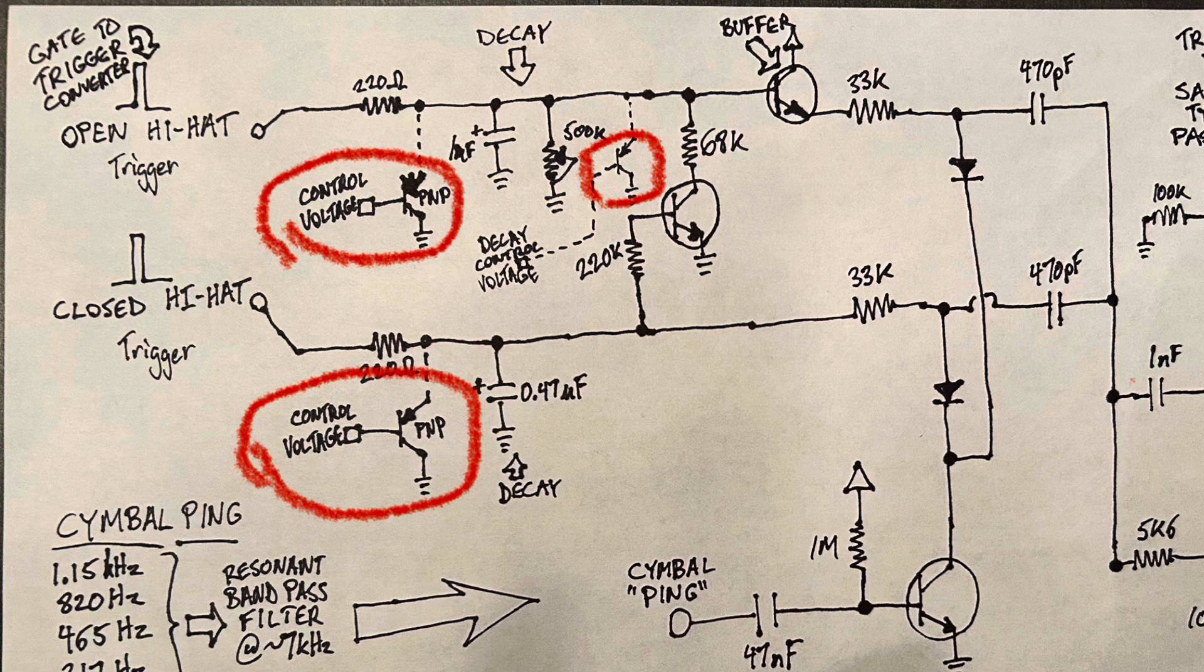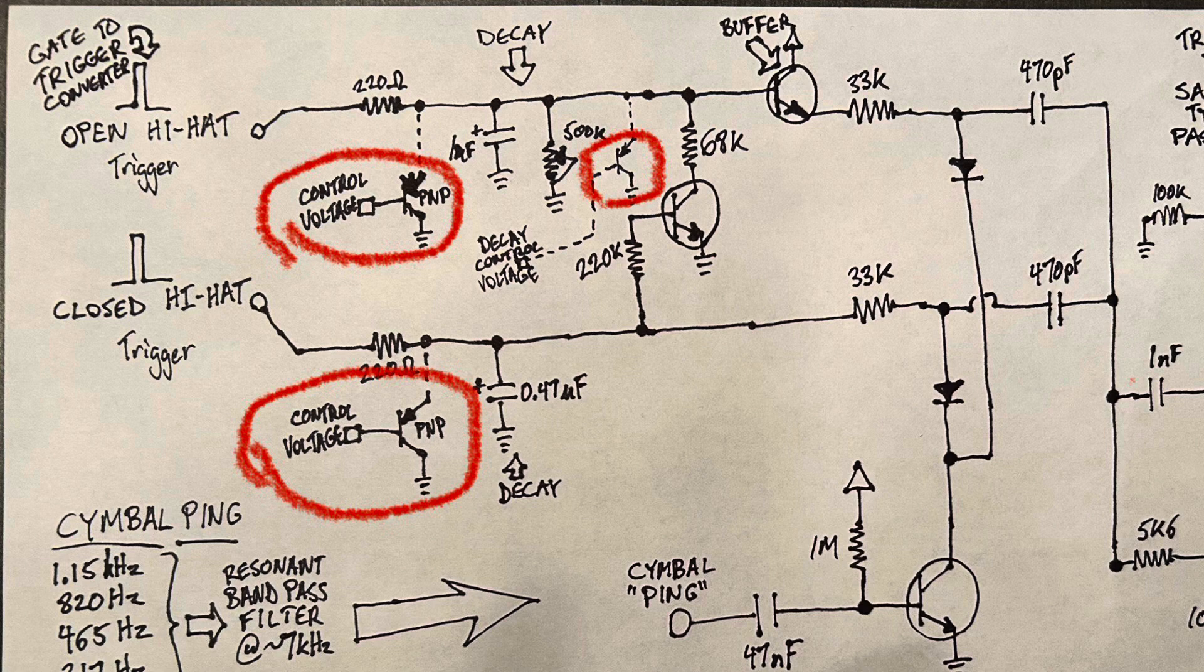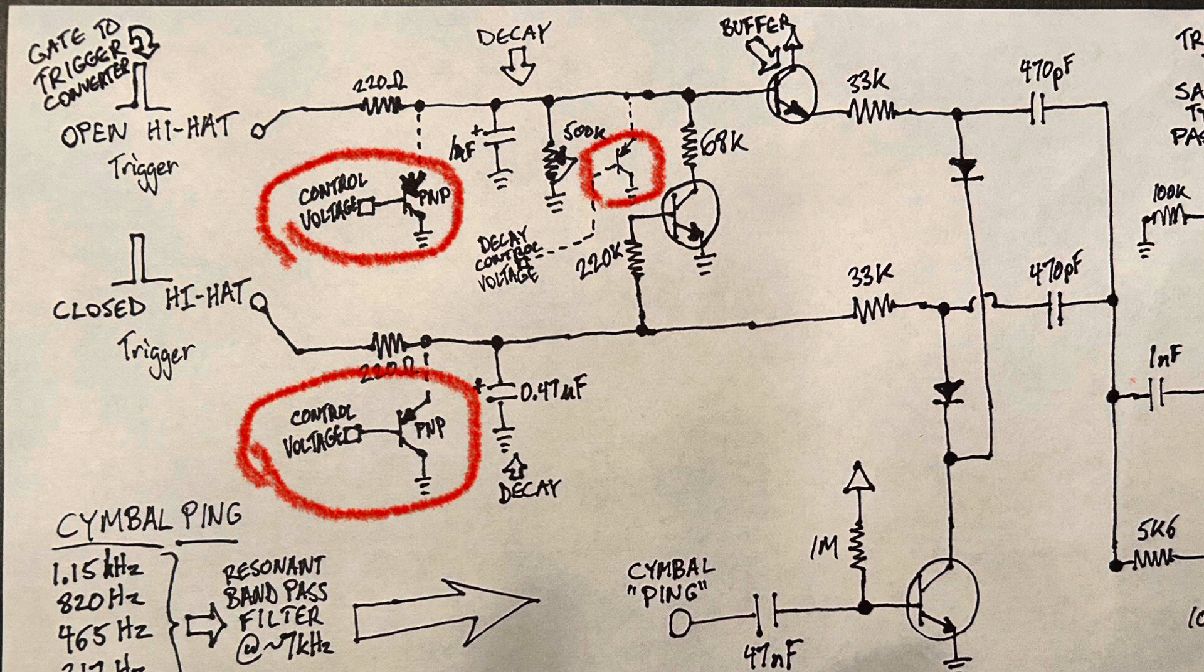The areas outlined in red here are optional, but these are PNP transistors to ground where the control voltage can be applied. The two on the left are for the actual strength of the hit of the initial signal, and the one on the right is for the decay of the open hi-hat.